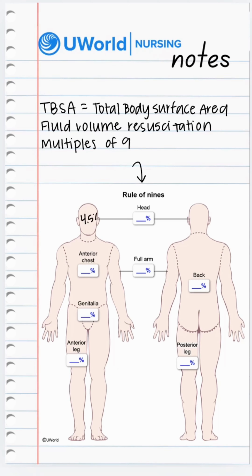Let's start at the top. The front and back of our head or skull is 9%. The front of our torso is 18%, so a multiple of 9. The back of our torso is 18%. The front and back of our arm is 9%.